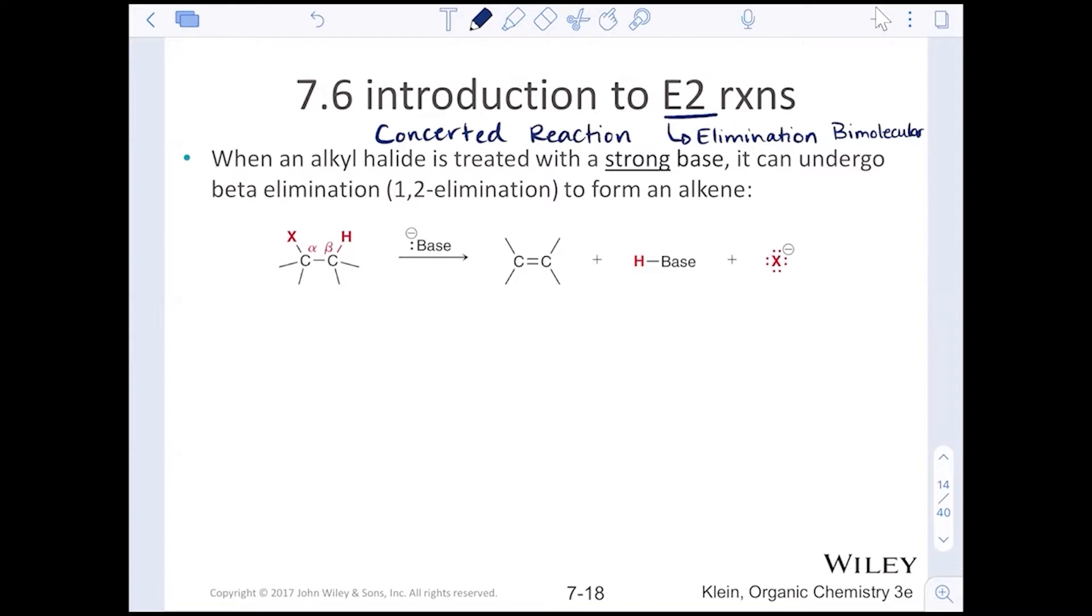When an alkyl halide is treated with a strong base, it can undergo these E2 reactions, also called beta elimination. The product is going to be an alkene. When we make a new pi bond, notice that two sigma bonds are broken and one pi bond is formed.